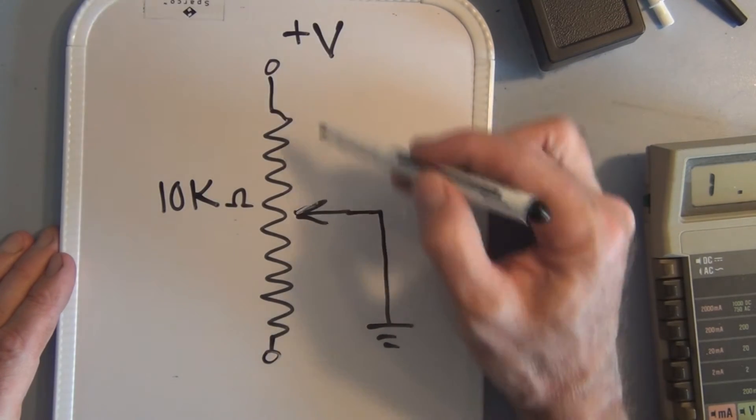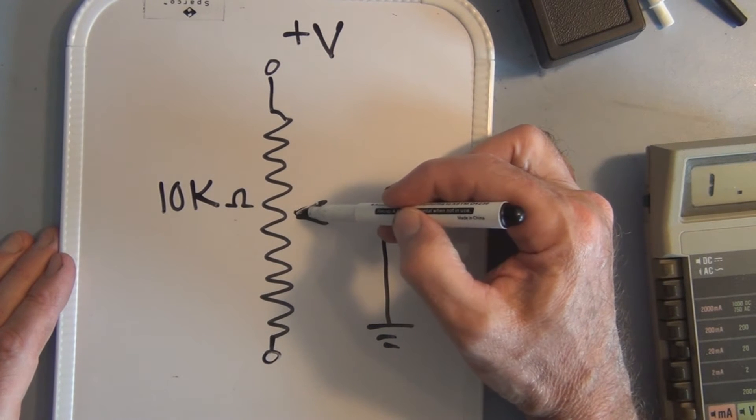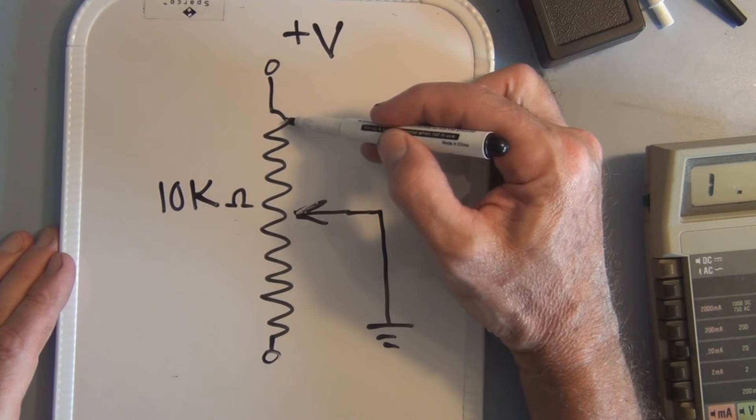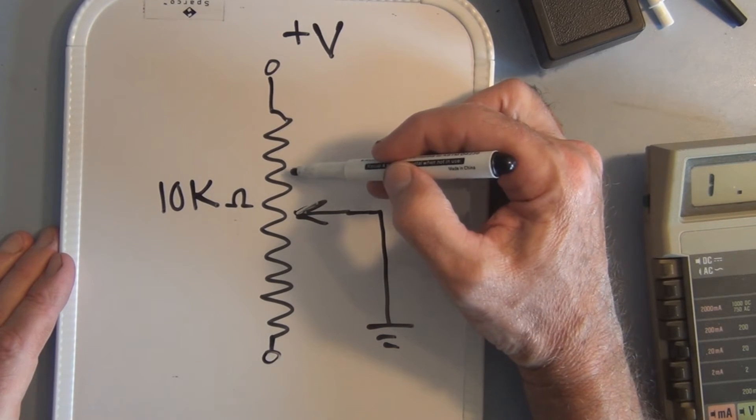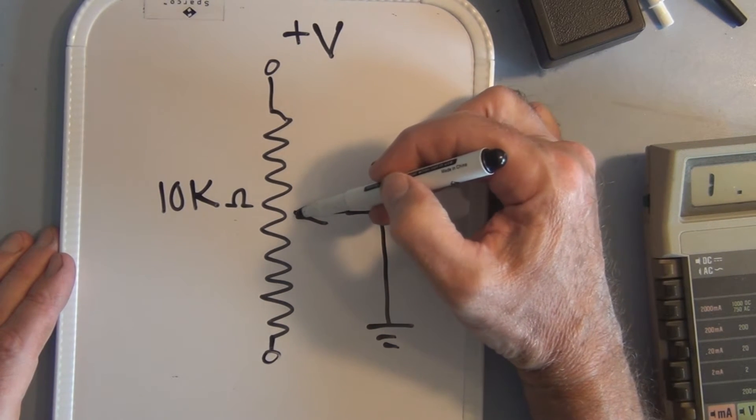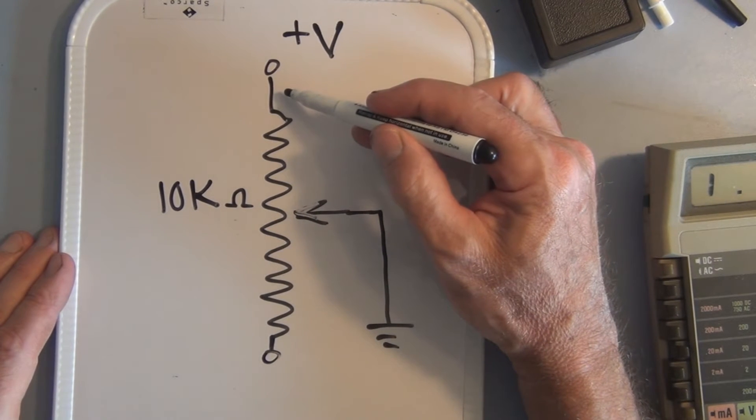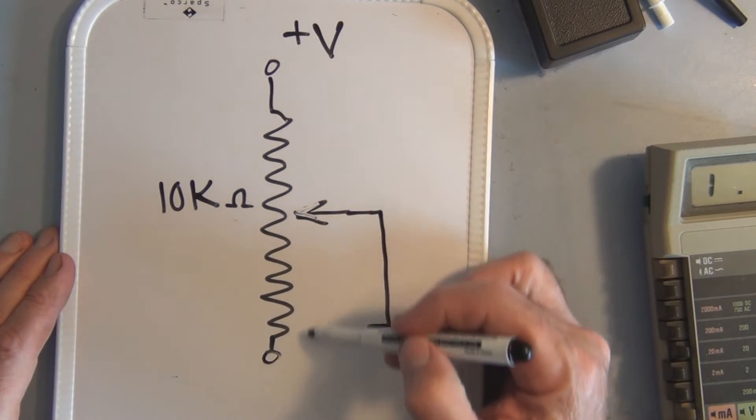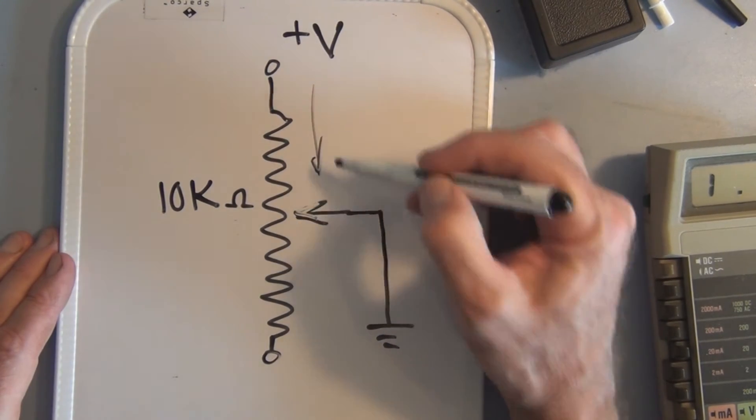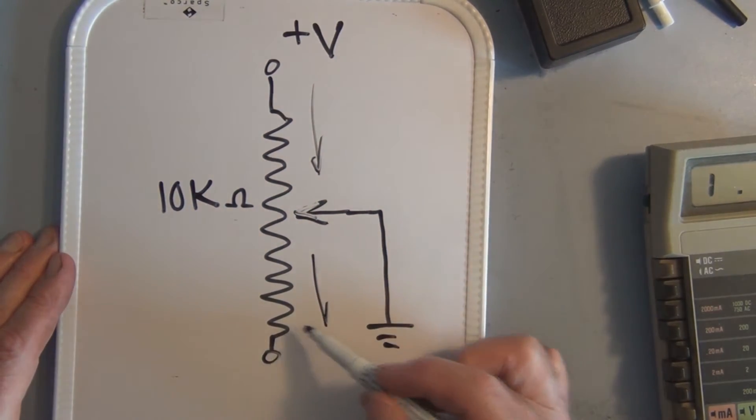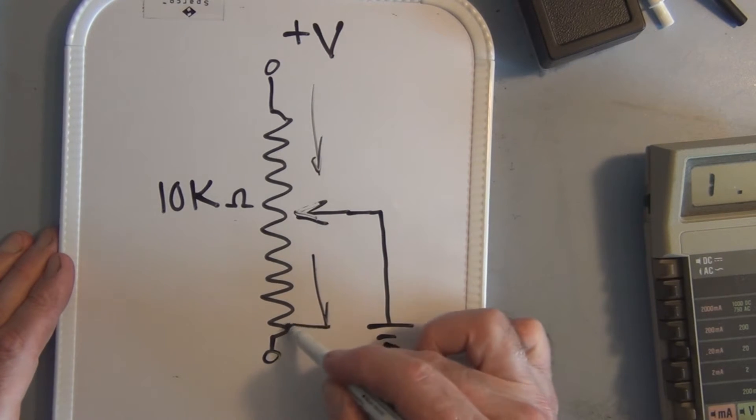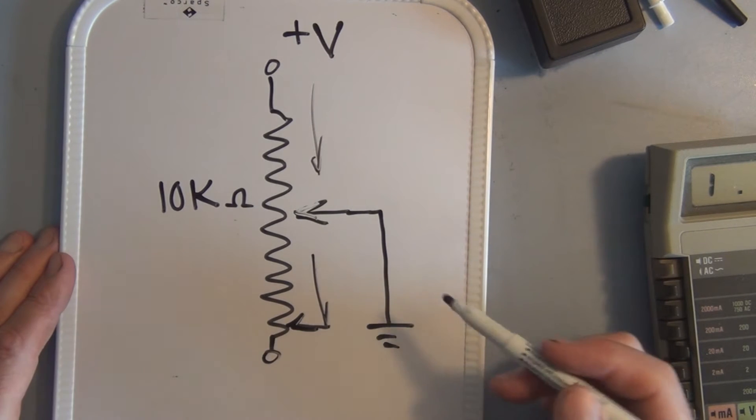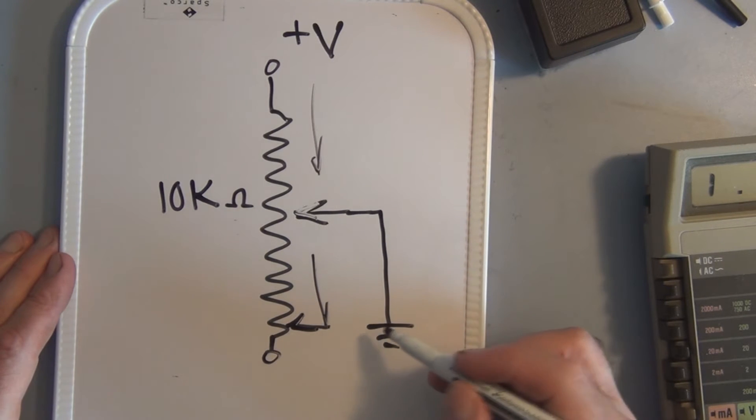So if this is your point of reference, as this contact gets closer and closer to your point of reference you have less of the resistive material between this contact and the point of reference so you'll have less resistance. As it goes in the other direction, the farther away from your point of reference to eventually getting to here, you're then utilizing the full 10k resistance in this particular example.